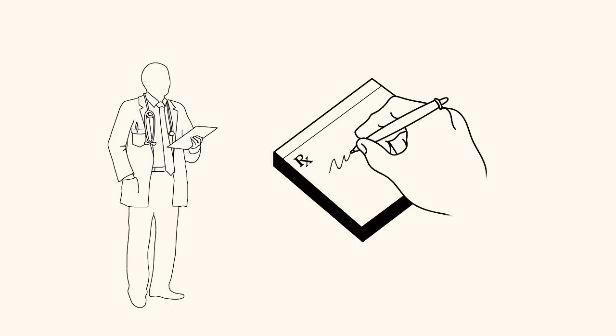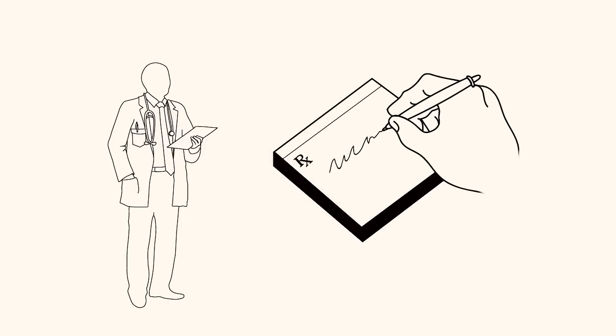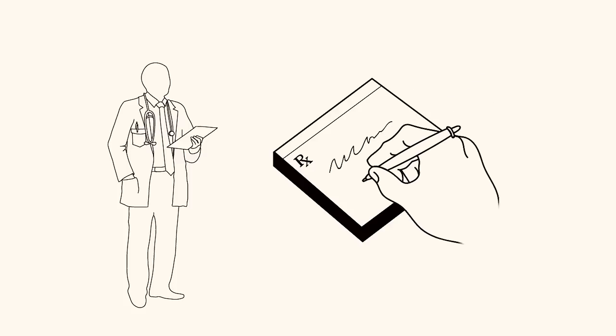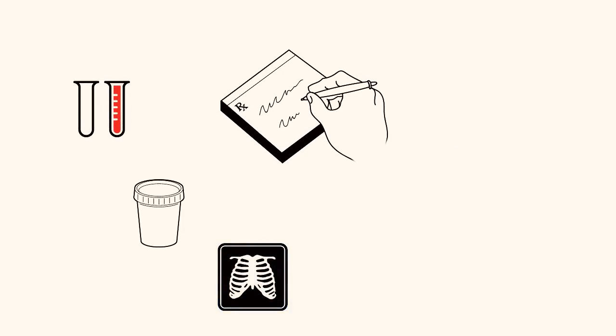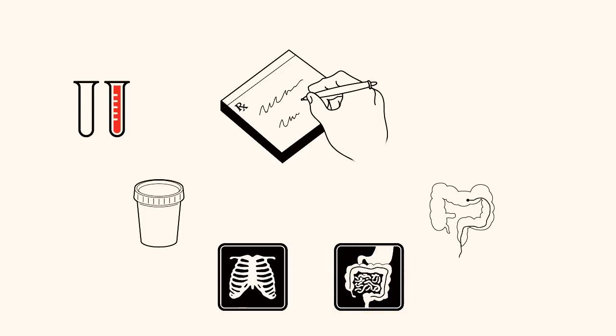To get a better sense of your disease and to monitor it over time, your doctor will likely order a number of tests, including blood tests, stool tests, x-rays, and scans such as CAT scans or MRIs, as well as scoping procedures like a colonoscopy.